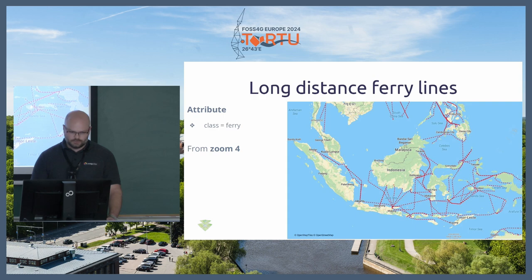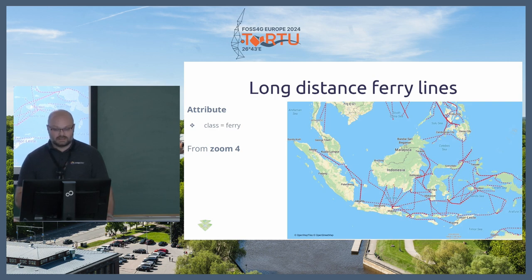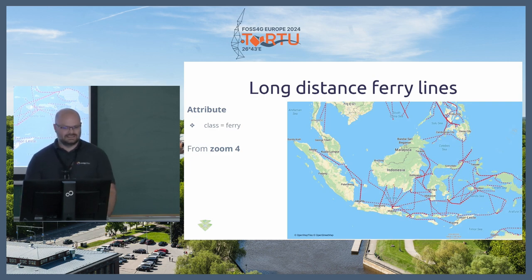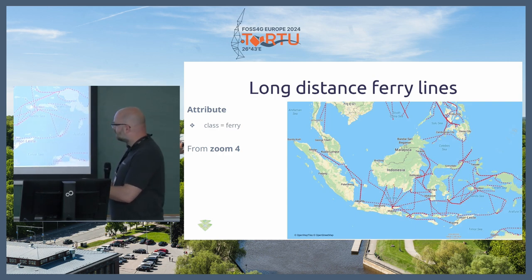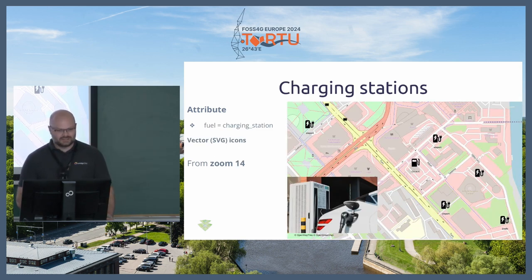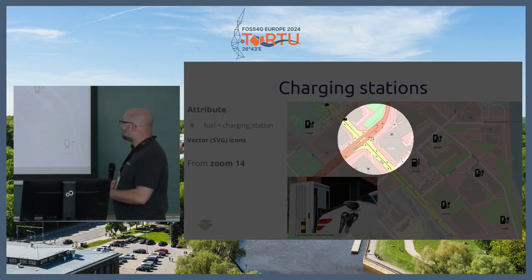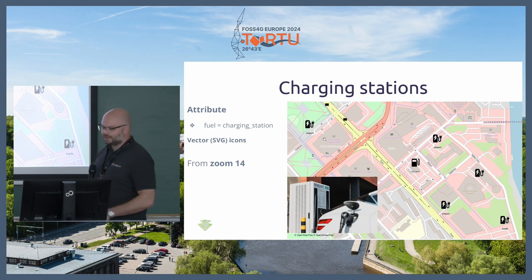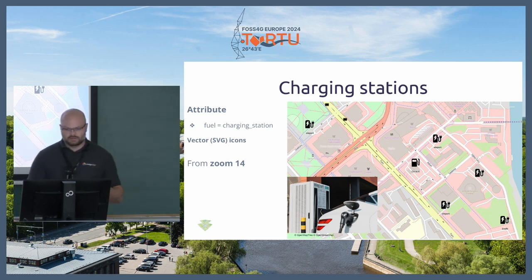Long-distance ferry lines are now visible from zoom level 4, so you can style ferry lines across empty seas and oceans — though the exaggerated styling shown is just for presentation purposes. Charging stations for electric vehicles are now included, with a vector icon so you can scale it without rasterization. This is shown using the OpenMapTiles style.